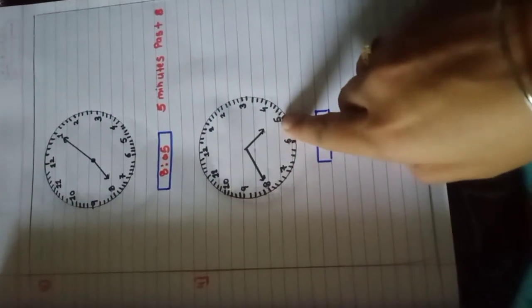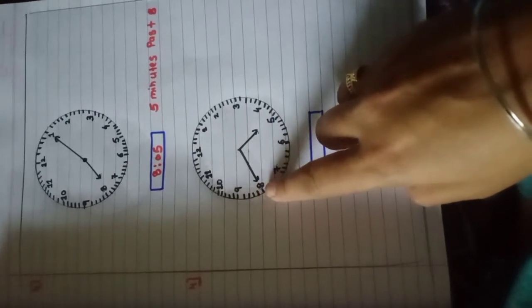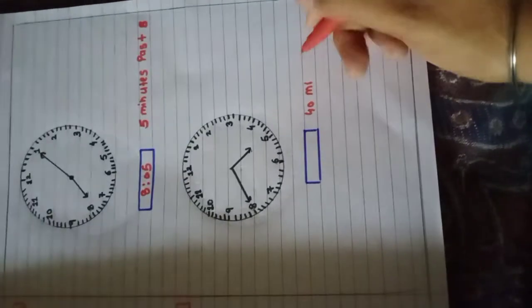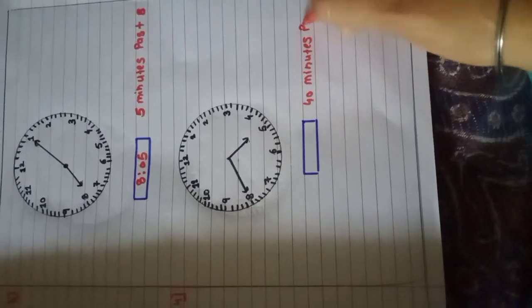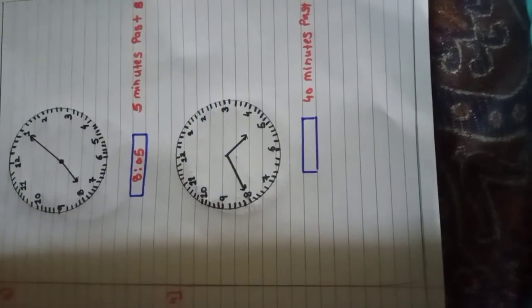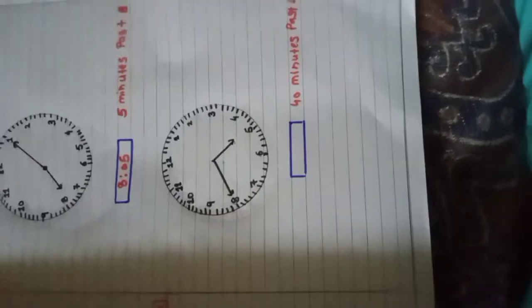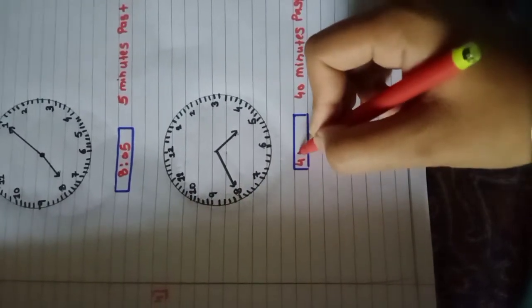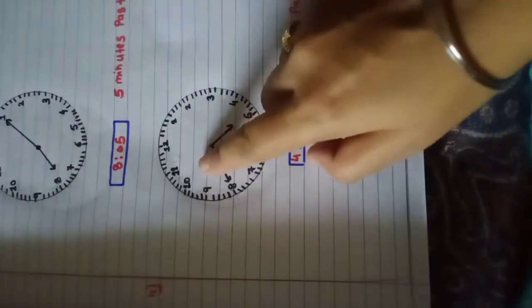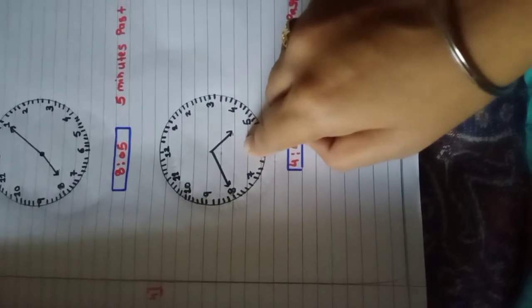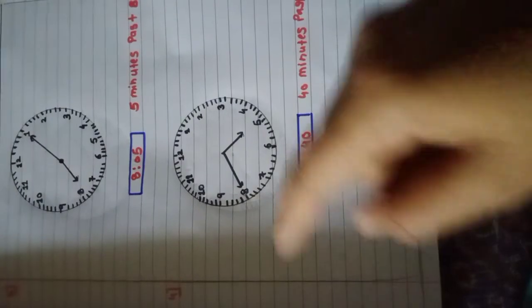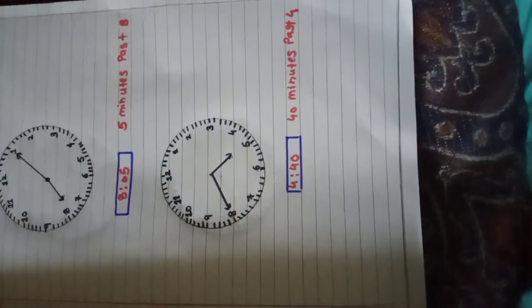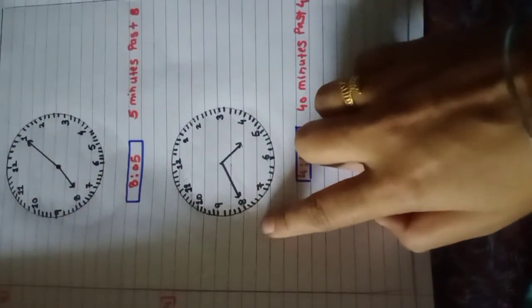Now here, the hour hand is on the 5 and the minute hand is on the 8. 8 means 40 minutes. So 40 minutes past 4. I will write here 4:40, because the hour hand is in between the 4 and 5. Because 8 means 40.